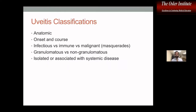In terms of classifications, we have anatomic classifications, the onset and course, etiology, granulomatous versus non-granulomatous, and whether the uveitis is isolated or associated with systemic disease. All of these different ways of classifying uveitis may seem like semantics, but they're very important in how we monitor and treat and manage patients.